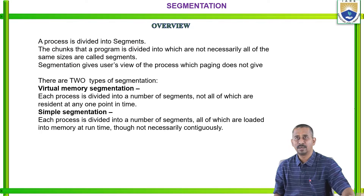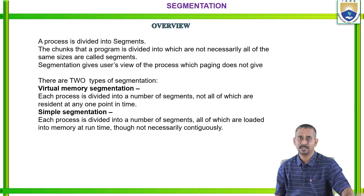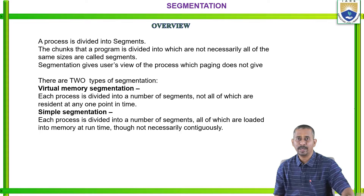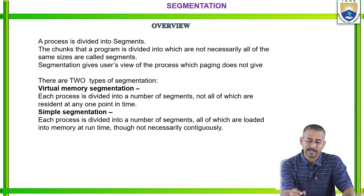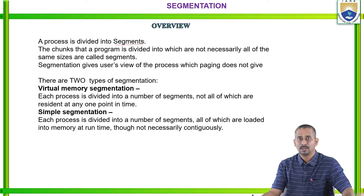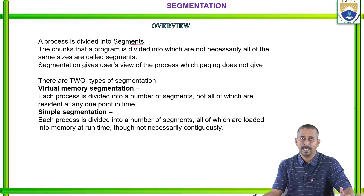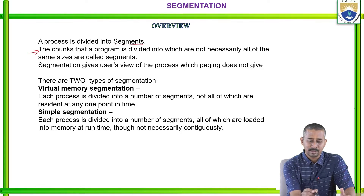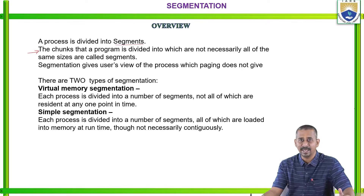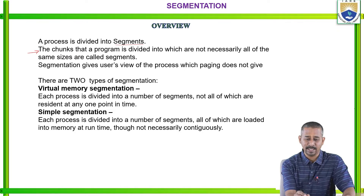What is the overview of segmentation? Whenever the processor executes a process, that particular process is divided into certain sub-parts. According to segmentation, those sub-parts are called segments. The process is divided into segments — the chunks that a program is divided into — which are not necessarily all of the same sizes. Those are called segments.